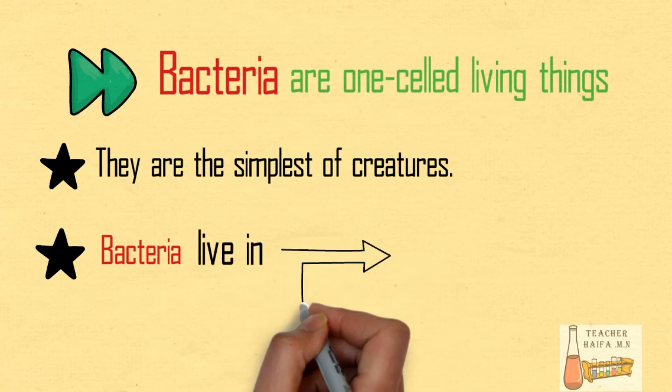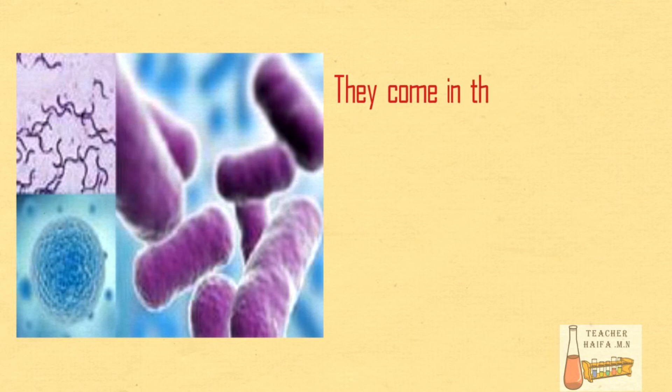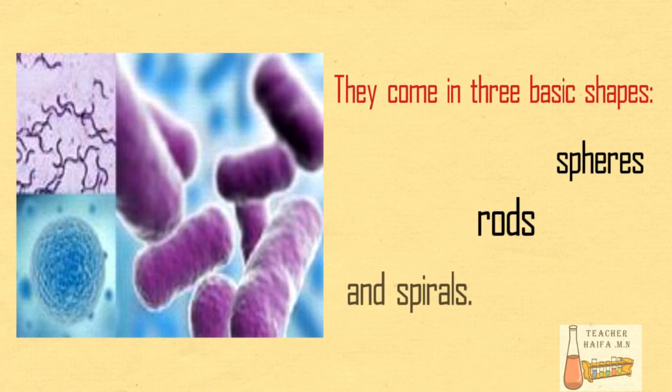Bacteria live in the air and underground. They come in three basic shapes: spheres, rods, and spirals.